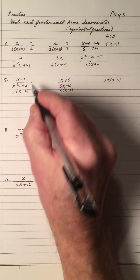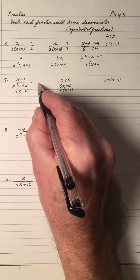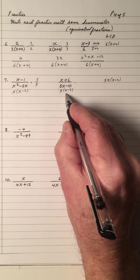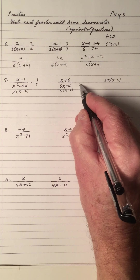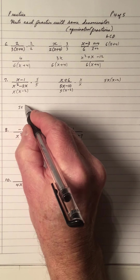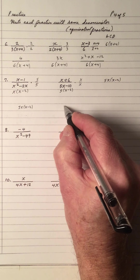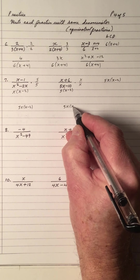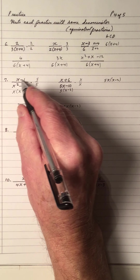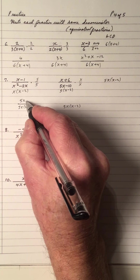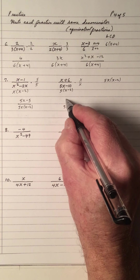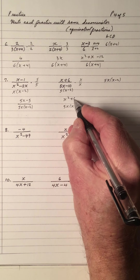So what do I multiply this one by? I need a 5 — 5 over 5. What do I multiply this one by? I need an x, so I multiply by x over x. The denominator is 5x times x minus 2 for both — keep them in the same order. Multiply: 5 times x minus 2 is 5x minus 5; x times x plus 6 is x squared plus 6x.